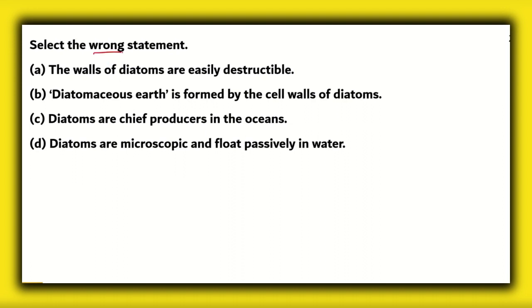Here, again, we have to select the wrong statement. Now, all of these statements are about diatoms. Diatoms are a group of creatures which belong to the kingdom Protista. Now, option A says the walls of diatoms are easily destructible. Option B says diatomaceous earth is formed by the cell walls of diatoms. Option C says diatoms are chief producers in the oceans. Option D says diatoms are microscopic and float passively in the water. So, what do we know about diatoms?